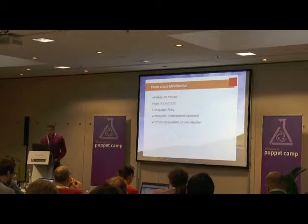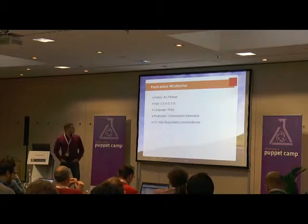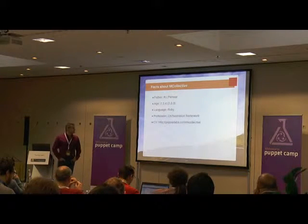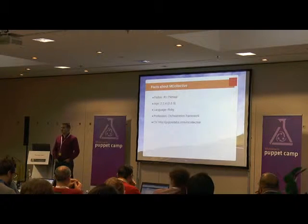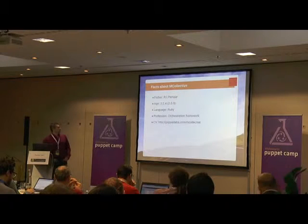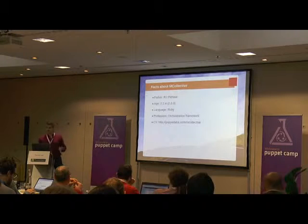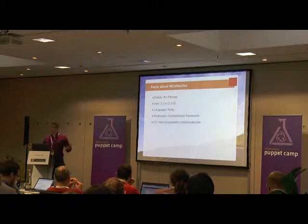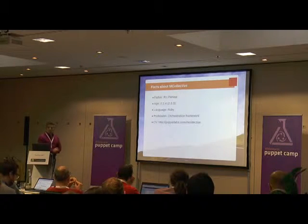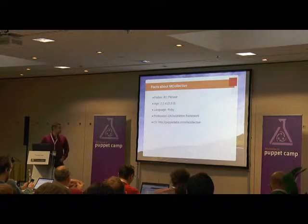First introduction slide: mCollective itself. It has been initially architected and written by R.I.P. NR. We are at version 2.2.4 right now. The development branch is at 2.3.3 — even numbers are the stable versions and odd numbers are the development ones. It's written in Ruby — surprise! But of course you can write shell, Perl, or PHP agents even from Marionette Collective if you don't like Ruby.